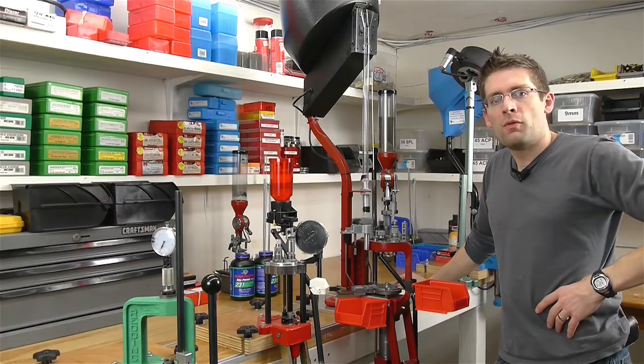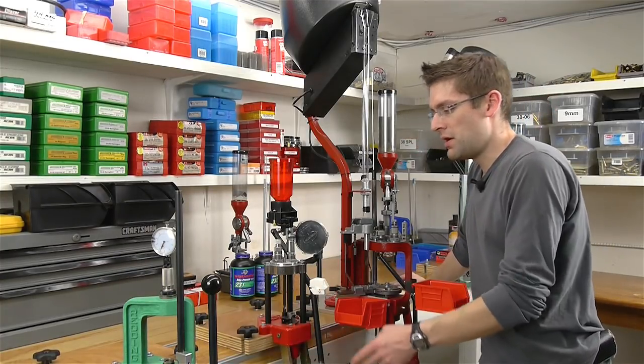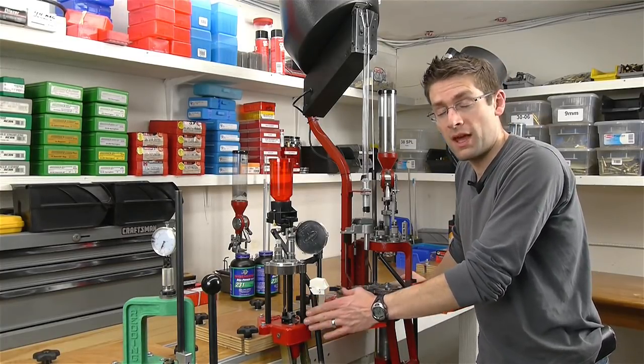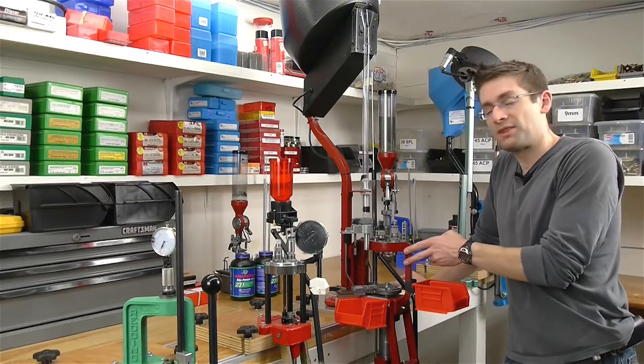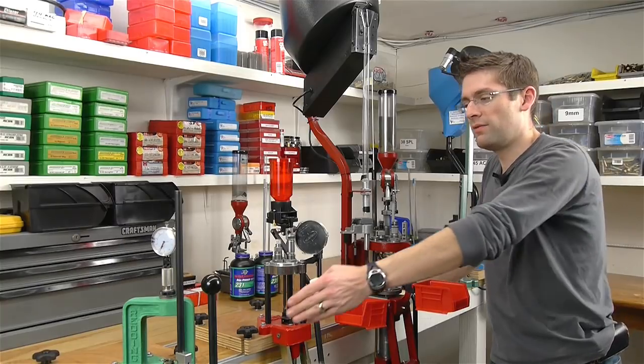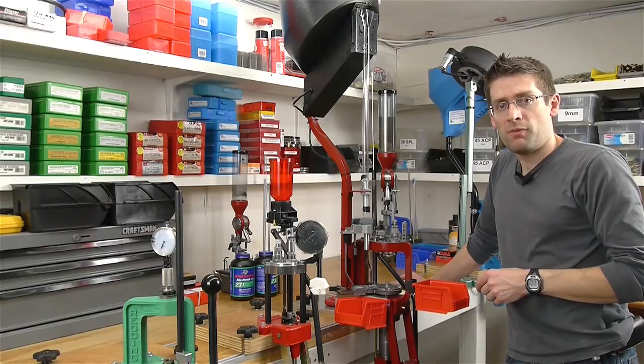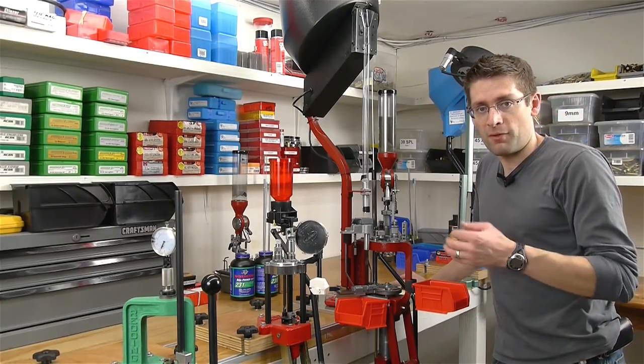All right, so in this video we saw three different types of reloading presses. We saw the single-stage, we saw the turret with auto-indexing, although some don't have auto-indexing, the turret head has to be manually indexed, and we also saw an auto-indexing progressive press. So we have the lowest price point, we have the middle price point, and we have the expensive price point, and we have various advantages and disadvantages for each type of press.